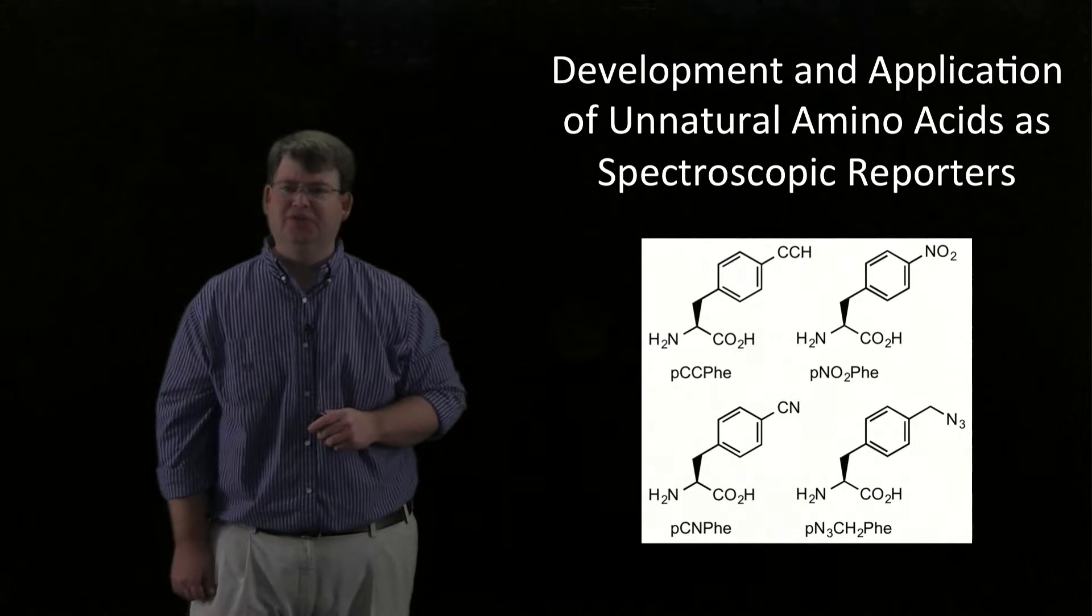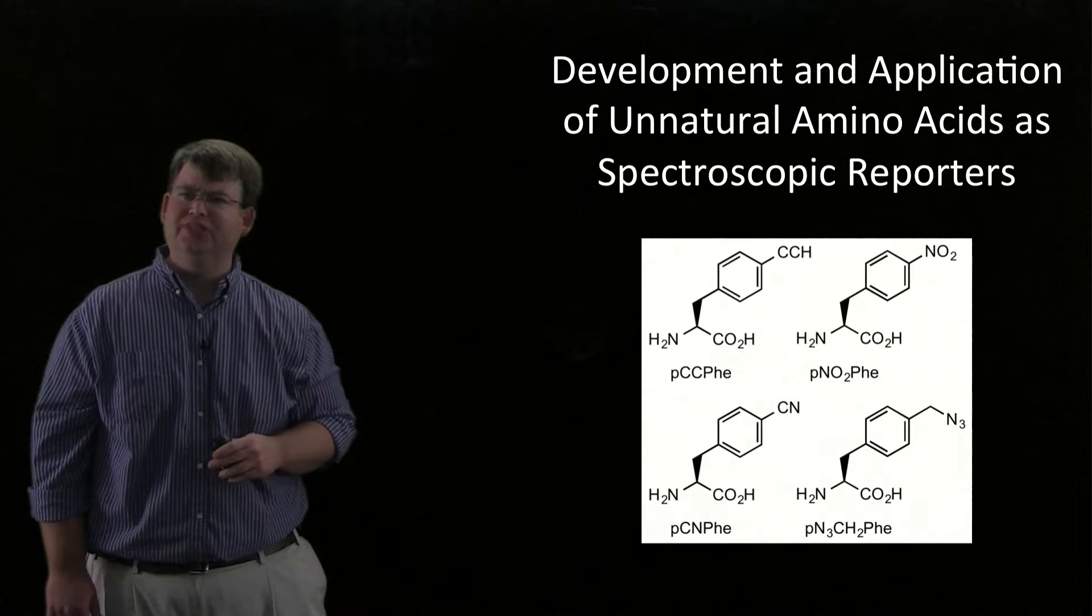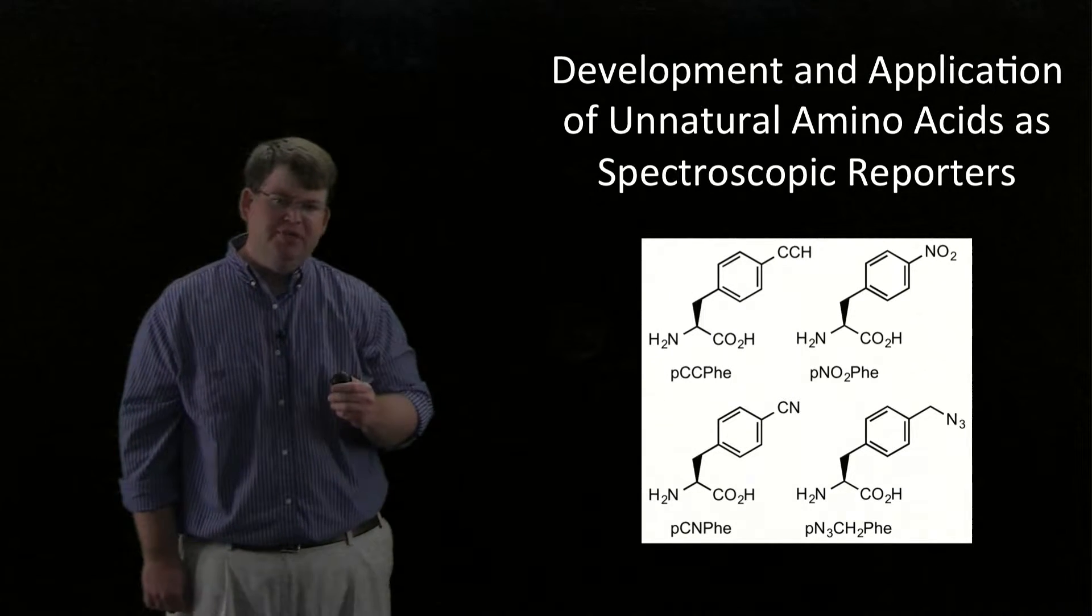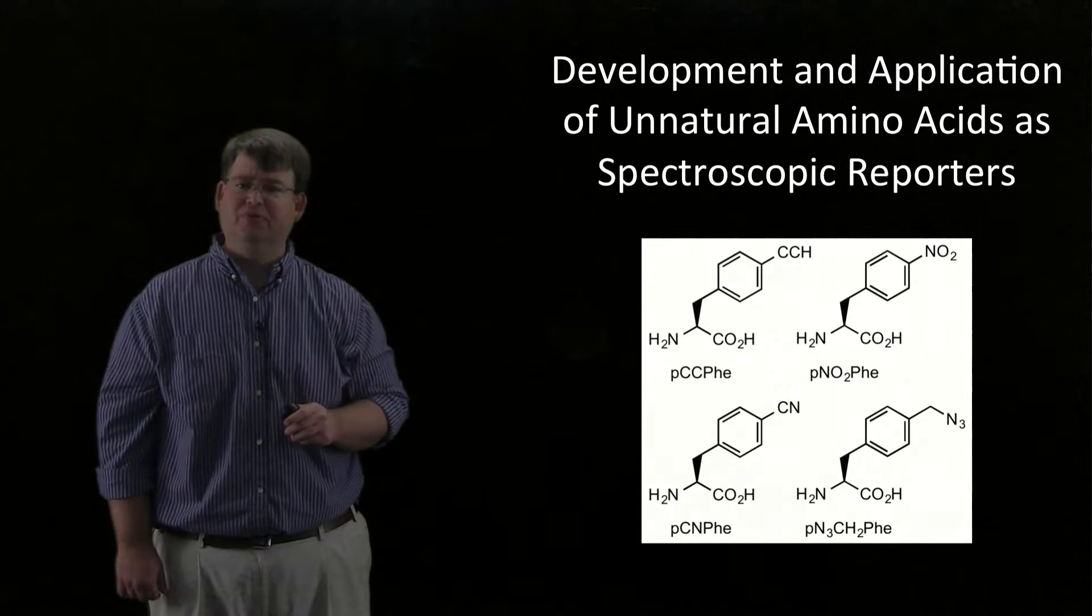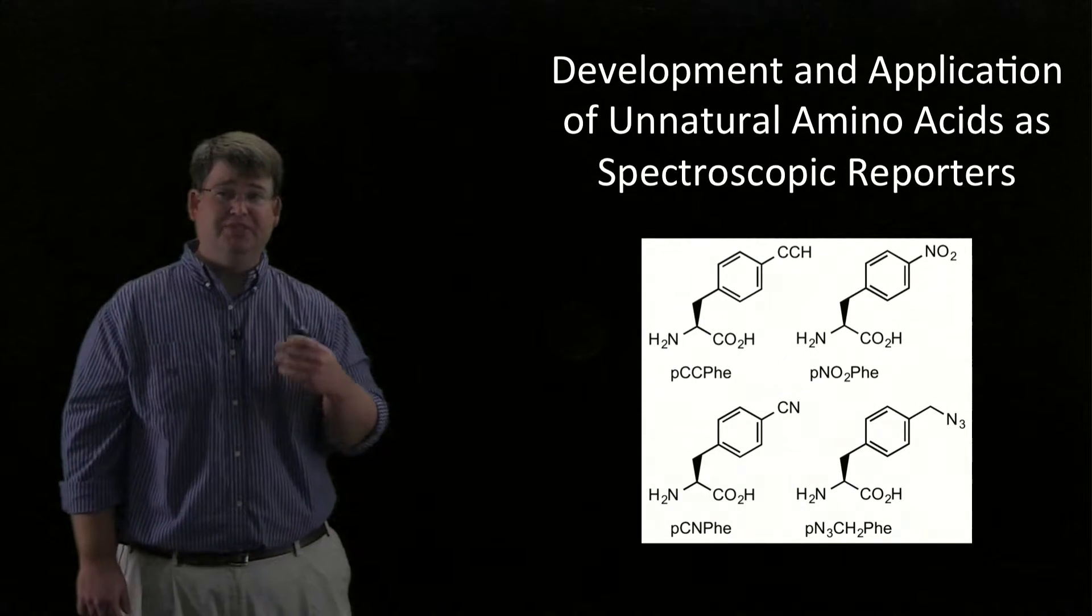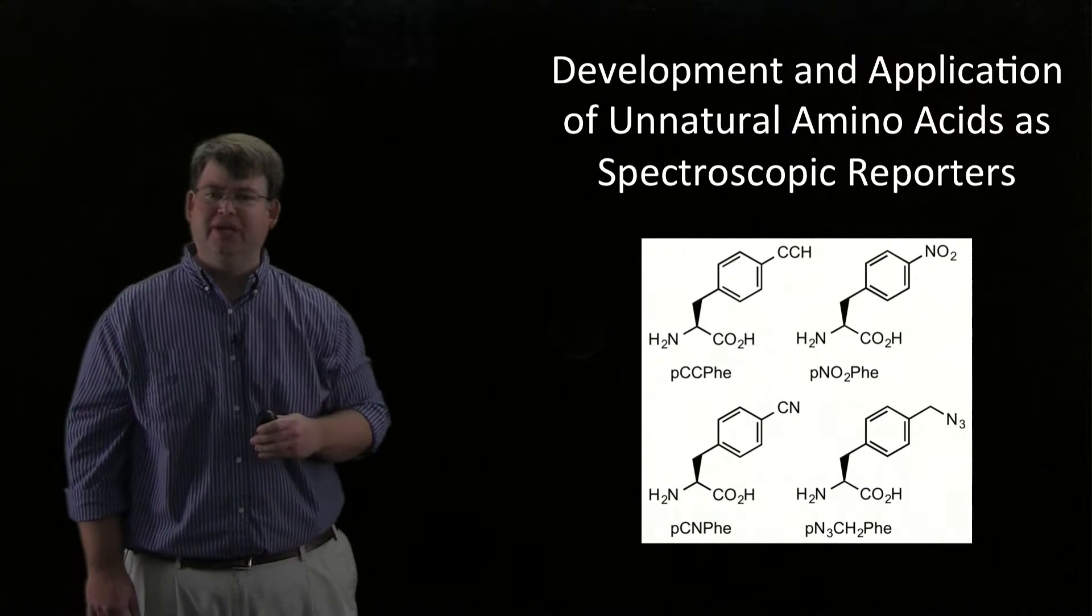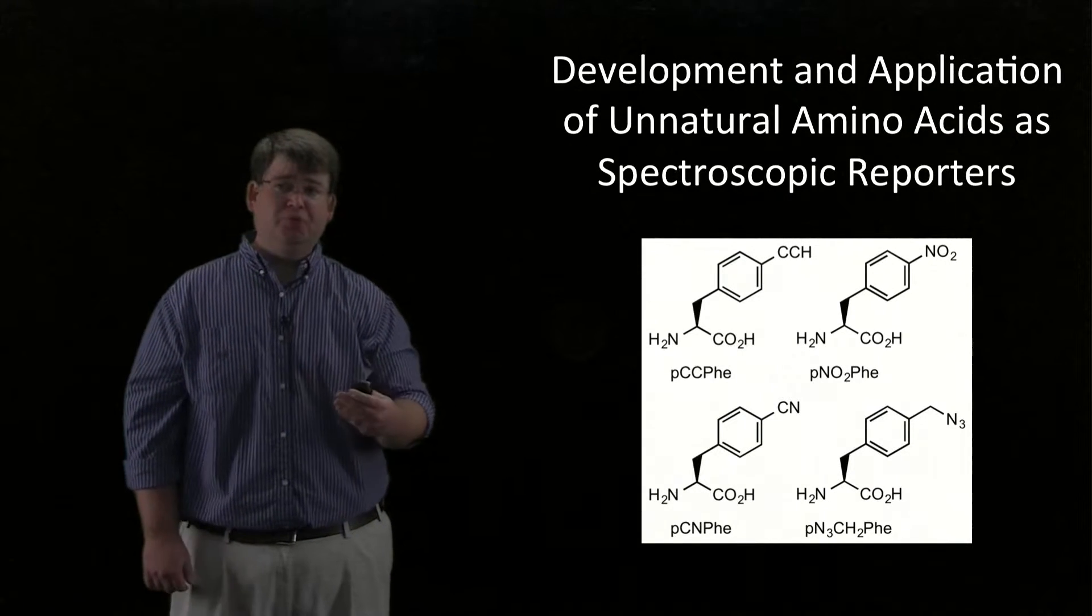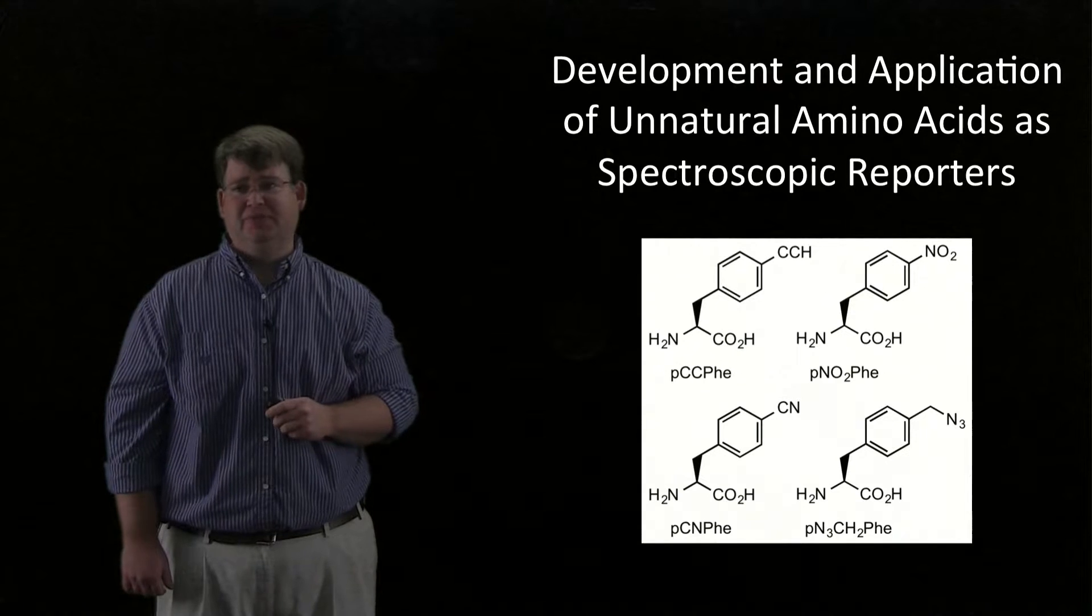As we're developing these unnatural amino acids, there's a few key characteristics that we look for. The unnatural amino acids need to have a spectroscopic observable that can be readily measured, it needs to be sensitive to its local environment, we need to be able to synthesize it in a fairly cost-effective manner, and we also need to be able to incorporate them into proteins in a site-specific manner.